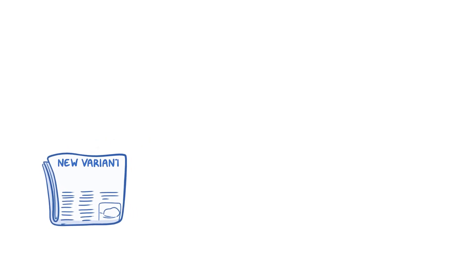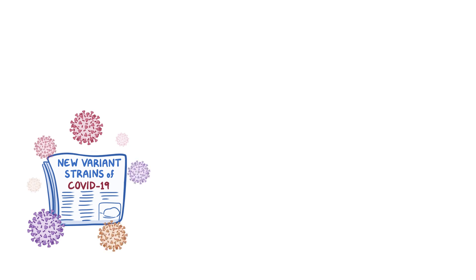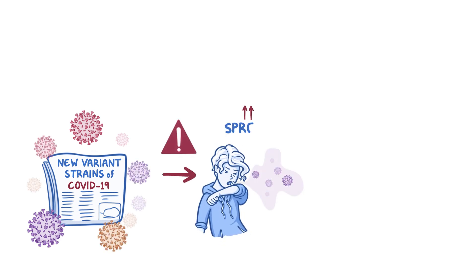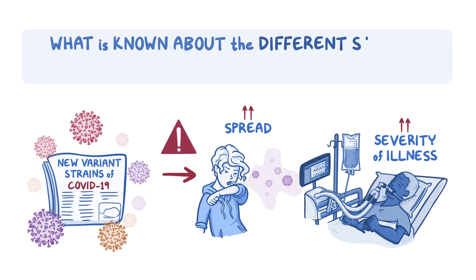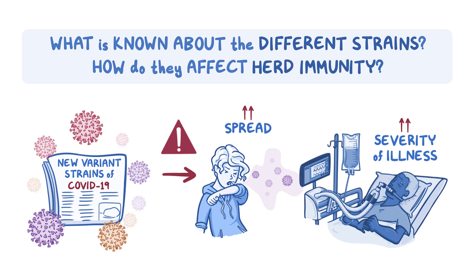By now you've likely heard about the new variant strains of COVID-19 that are circulating around the world. There are a number of concerns with these new strains, as they may make it easier to spread COVID-19 to others and they may increase the severity of COVID-19 illness. This video aims to explain what is known about the different strains and how they may affect achievement of herd immunity.